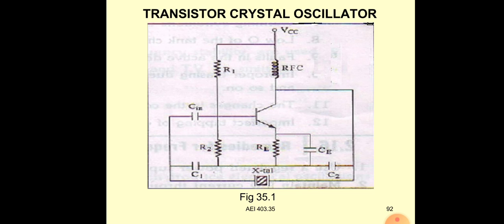So first, what is a crystal? We have seen LC oscillator and RC oscillator. LC oscillator cannot produce the low frequency signal and LC oscillator has some losses. LC oscillator circuit becomes bulky and cost expensive. RC oscillator cannot produce the high frequency signal and the frequency stability is not up to the mark.